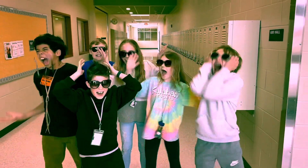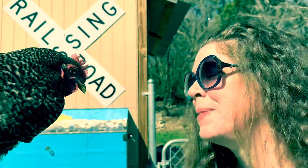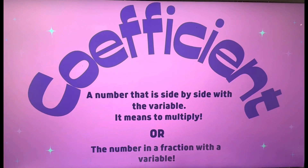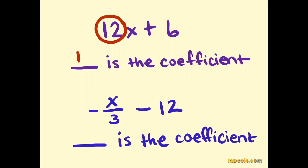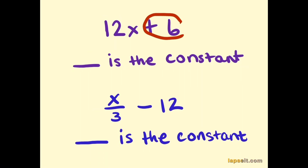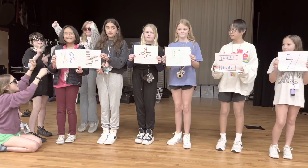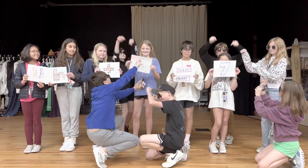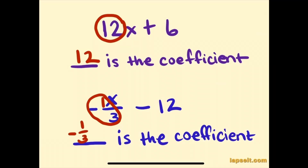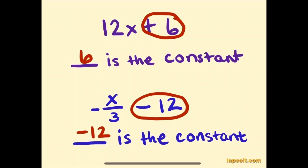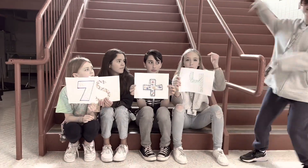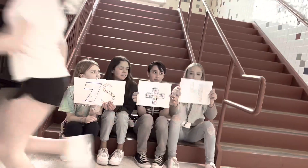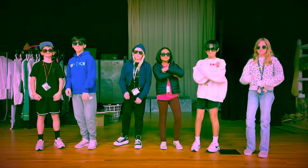What about the numbers? Numbers in expressions have different names — pay close attention because they're not the same. Coefficient is the number side by side; constant is all alone. Coefficient is multiply or divide; constant is minus or sum. Coefficient, constant — know the difference.